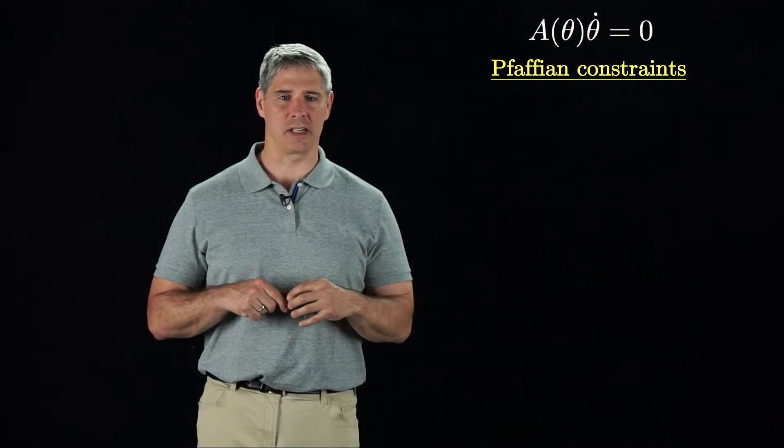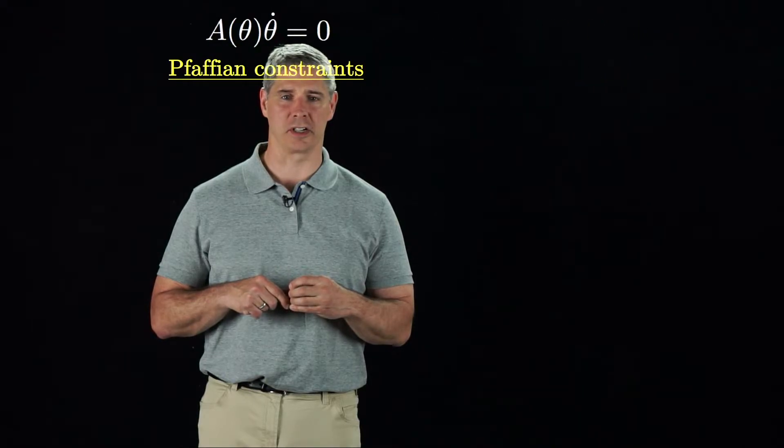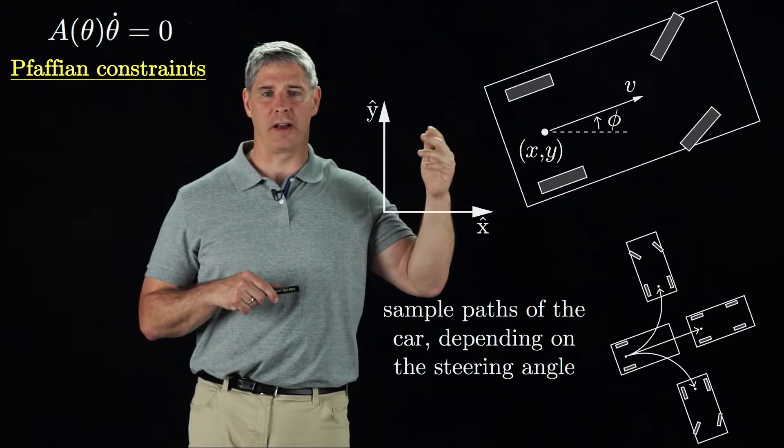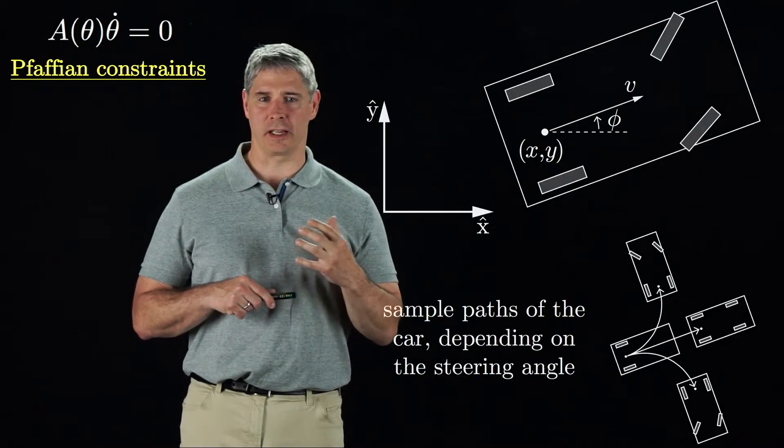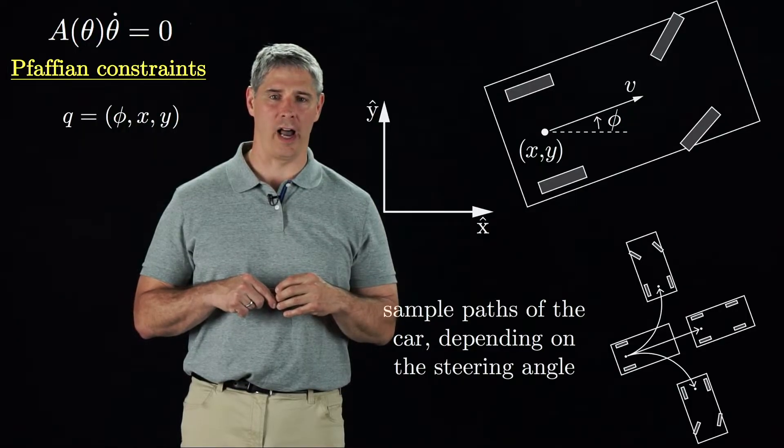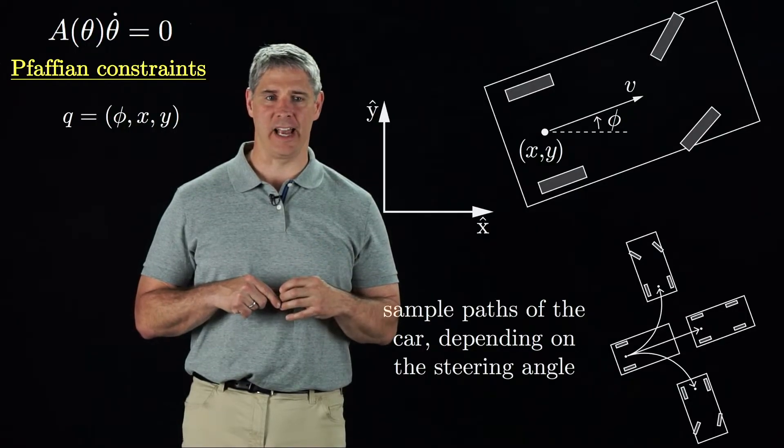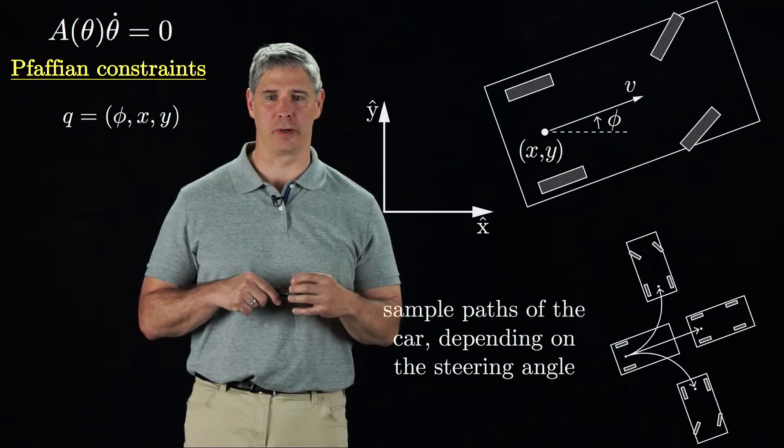In some cases, though, a set of velocity constraints cannot be integrated to equivalent configuration constraints. Consider the chassis of a car driving on a plane. If we define an xy reference frame, we can represent the configuration of the chassis as q equal to phi, x, y, where phi is the chassis angle and xy refers to the location of a point halfway between the rear wheels.